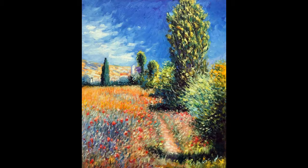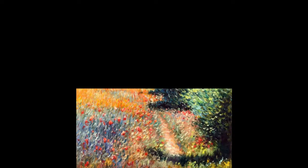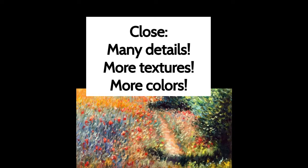Now try to find which part of this painting by Monet is close, medium, and far away by noticing the amount of detail. Here are the areas separated out. If you guessed this part was close — good job! This part has many details: more textures, more colors, lots going on. So this is the close part.